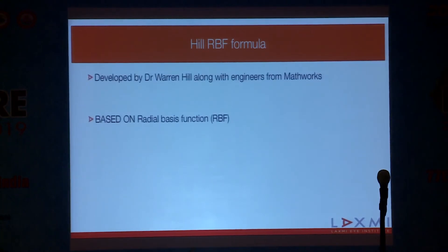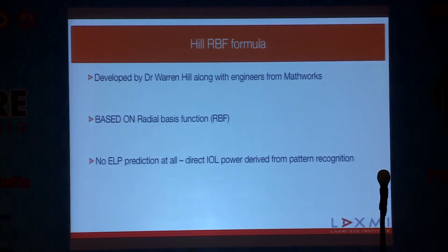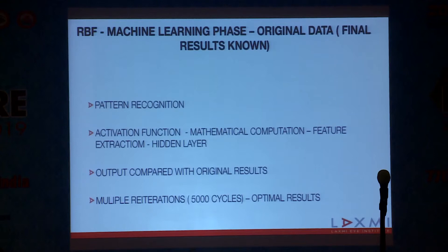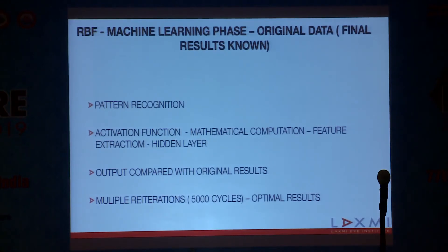Hill RBF formula was developed by Dr. Warren Hill along with engineers from MathWorks. It is based on radial basis function. There is no ELP prediction — direct IOL power is derived from pattern recognition. The RBF works in two phases: Phase 1 is machine learning on a known database, and Phase 2 is application to new data. RBF machine learning involves pattern recognition, activation function with feature extraction in the hidden layer, output comparison, and multiple reiterations — around 5,000 cycles — to obtain optimal results.